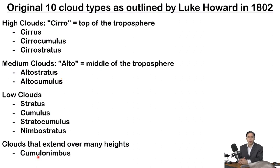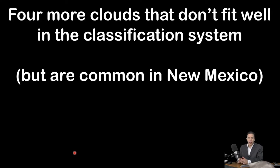We've just gone over the original ten cloud types that Luke Howard described in 1802. We've got three high clouds, two medium clouds, four low clouds, and one that goes over multiple heights. Now I'm going to give you four more clouds that don't quite fit well in his classification system but are clouds you will see here in New Mexico quite a bit.